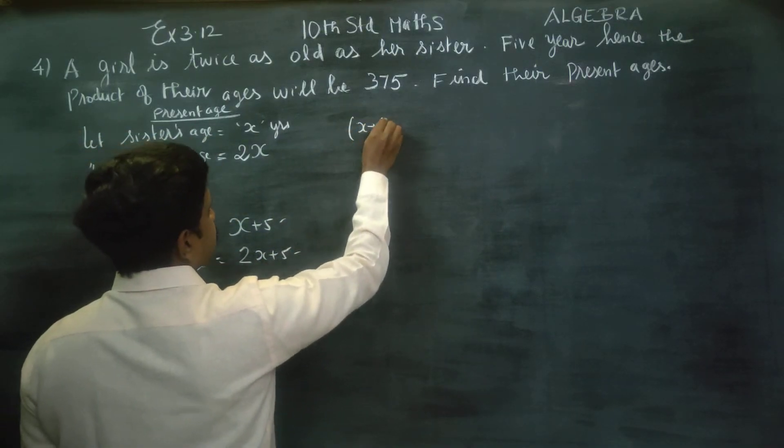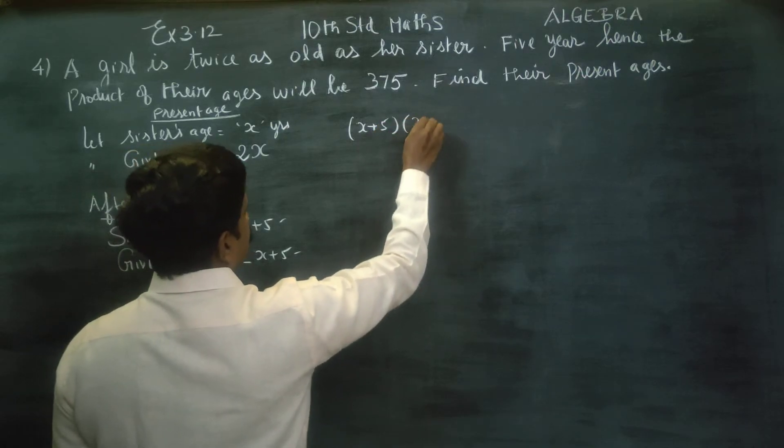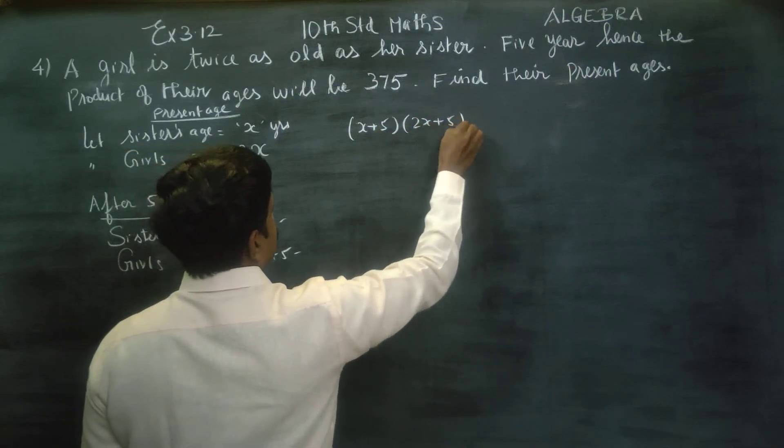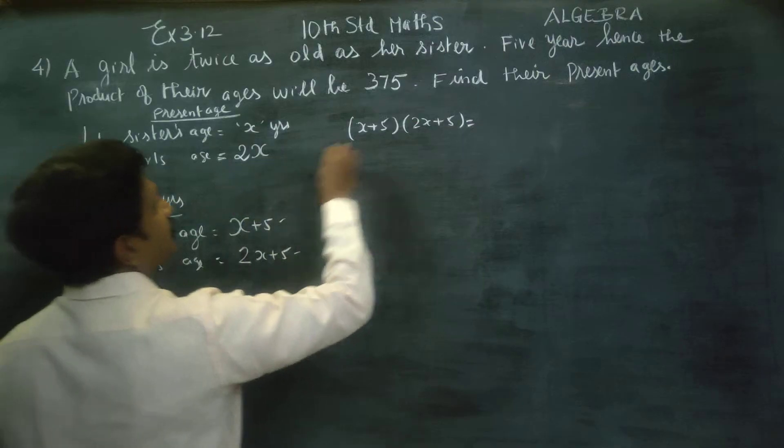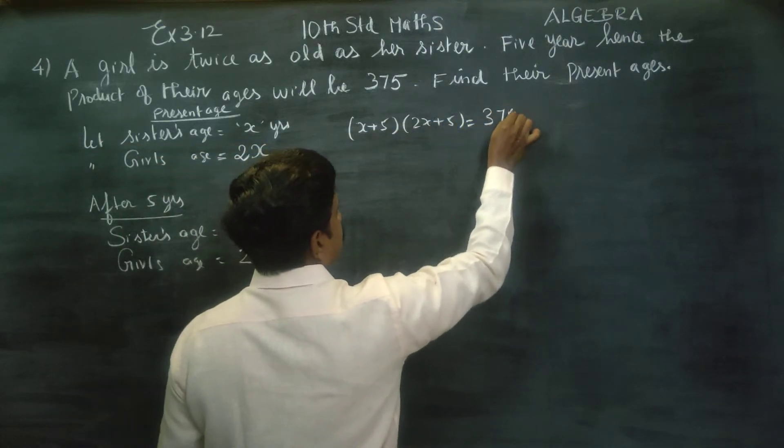Product of their ages will be 375. Product of their ages, after 5 years, is equal to 375. x plus 5 into 2x plus 5 is equal to 375.